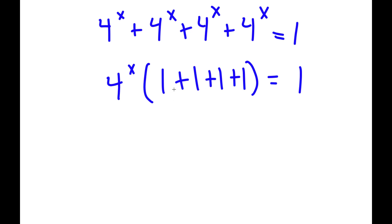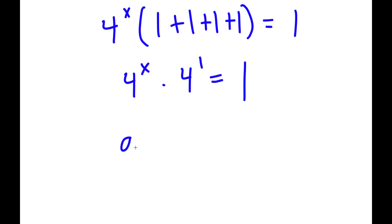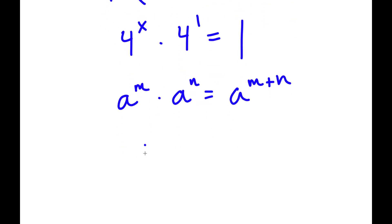If I simplify the parentheses, I get 4 to the power of x times 4 is equal to 1. Now 4 here is the same thing as 4 to the power of 1. And if I have something in the form a to the power of m times a to the power of n, this equals a to the power of m plus n. So 4 to the power of x times 4 to the power of 1 equals 4 to the power of x plus 1, and this is all equal to 1.